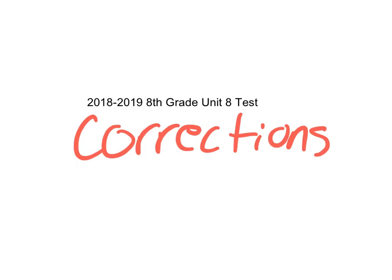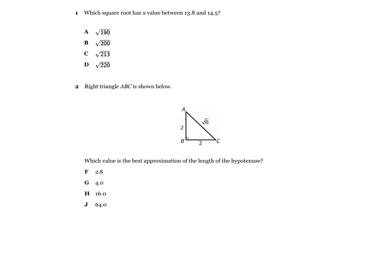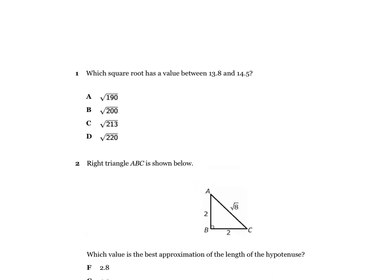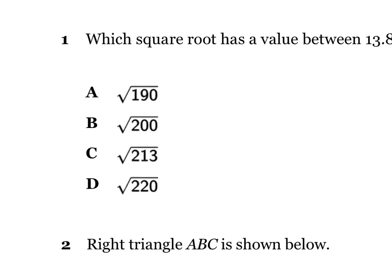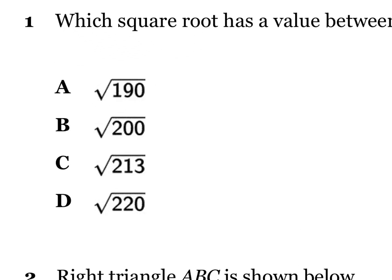Alright guys, this is going to be your unit 8 test corrections. Taking a look at number 1, it says which square root has a value between 13.8 and 14.5. All you have to do is go in the calculator and on each one of these, you want to get the square root and see which one matches best.